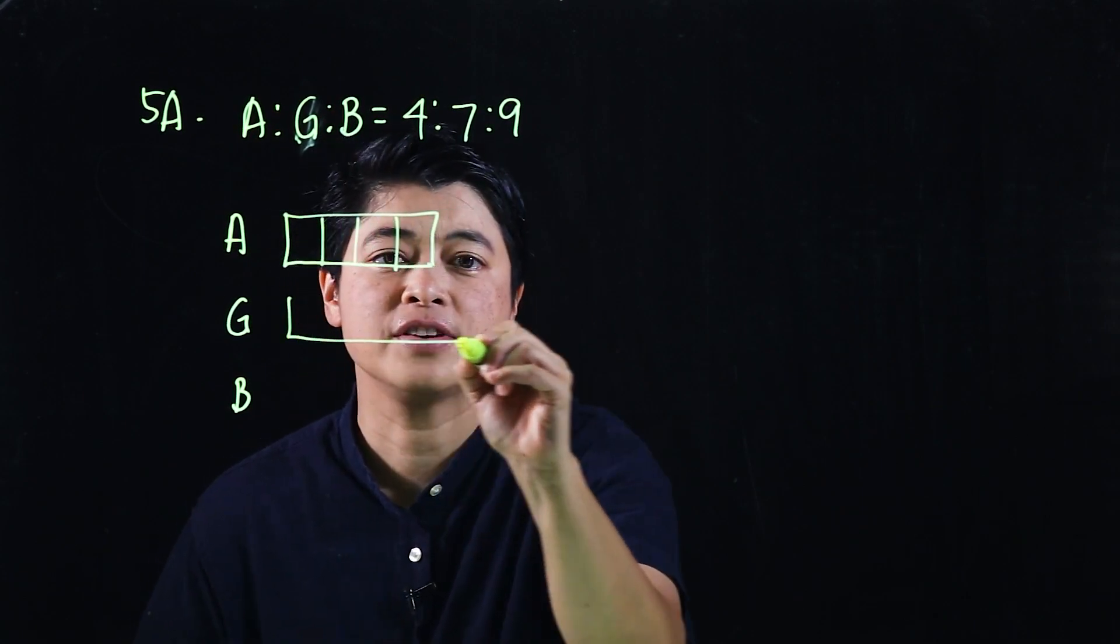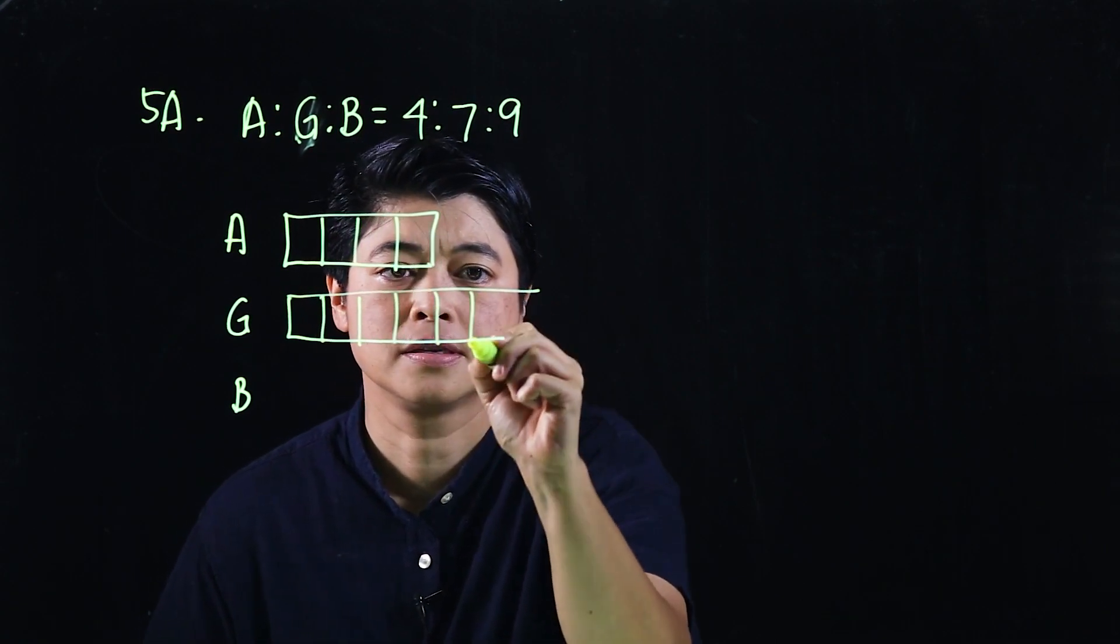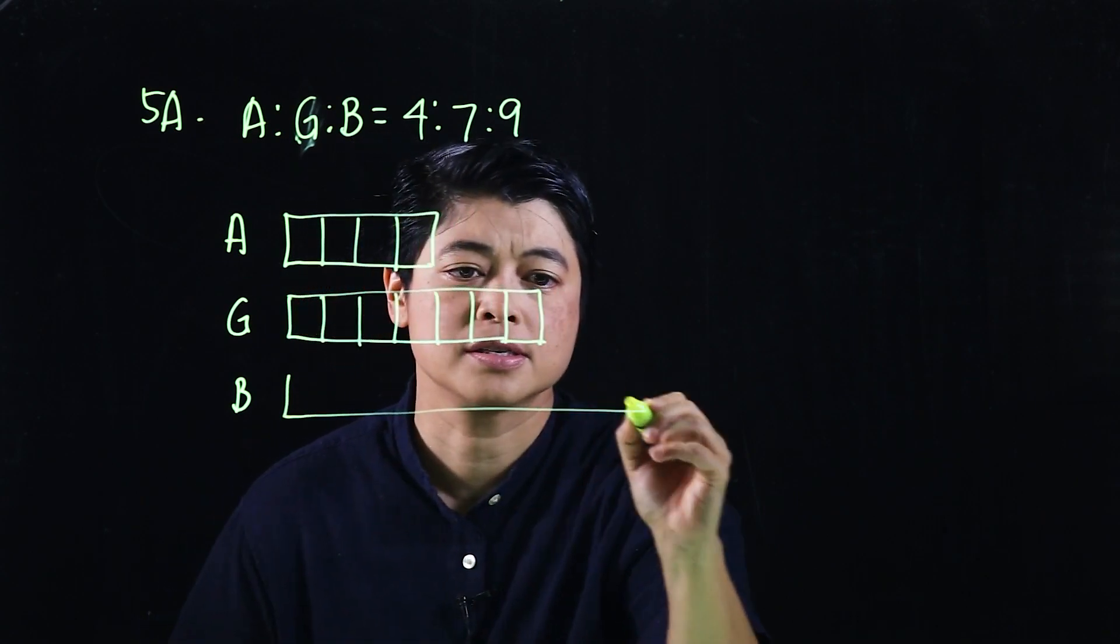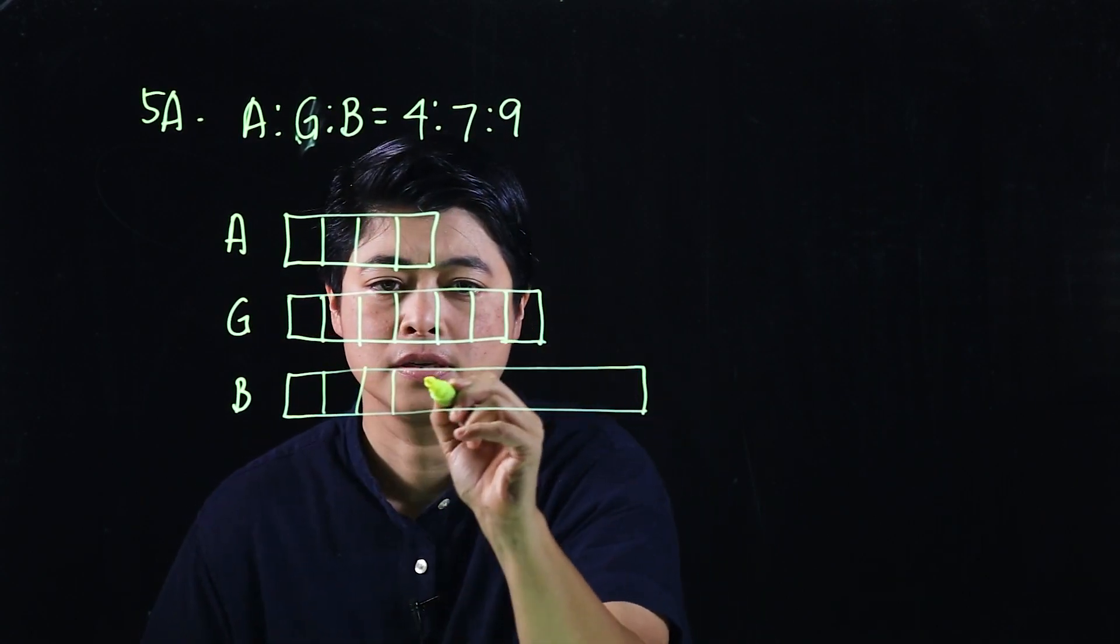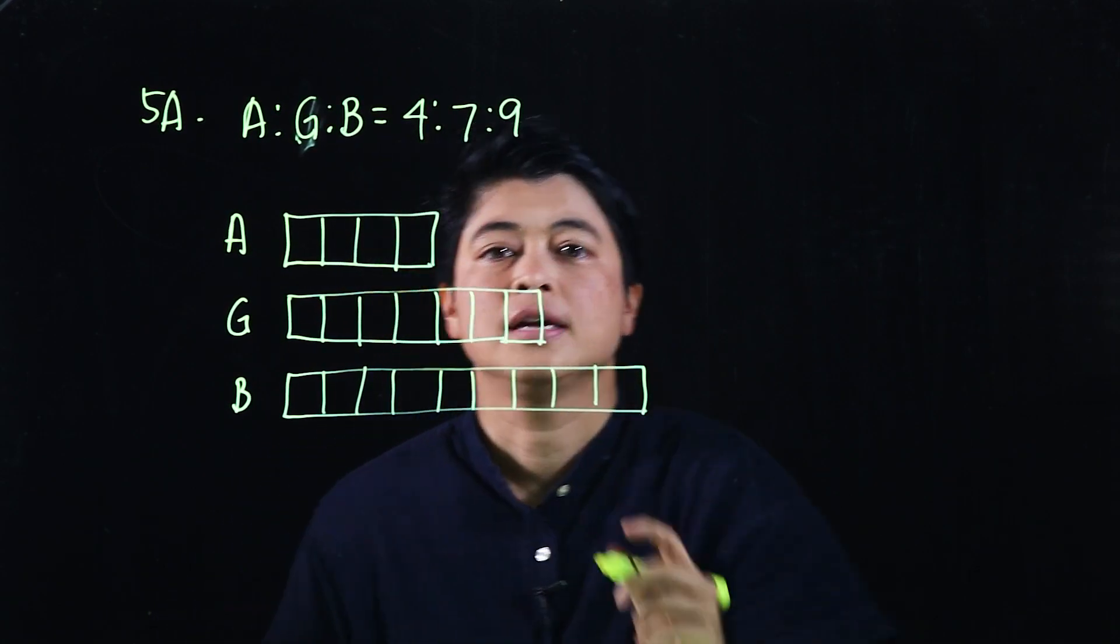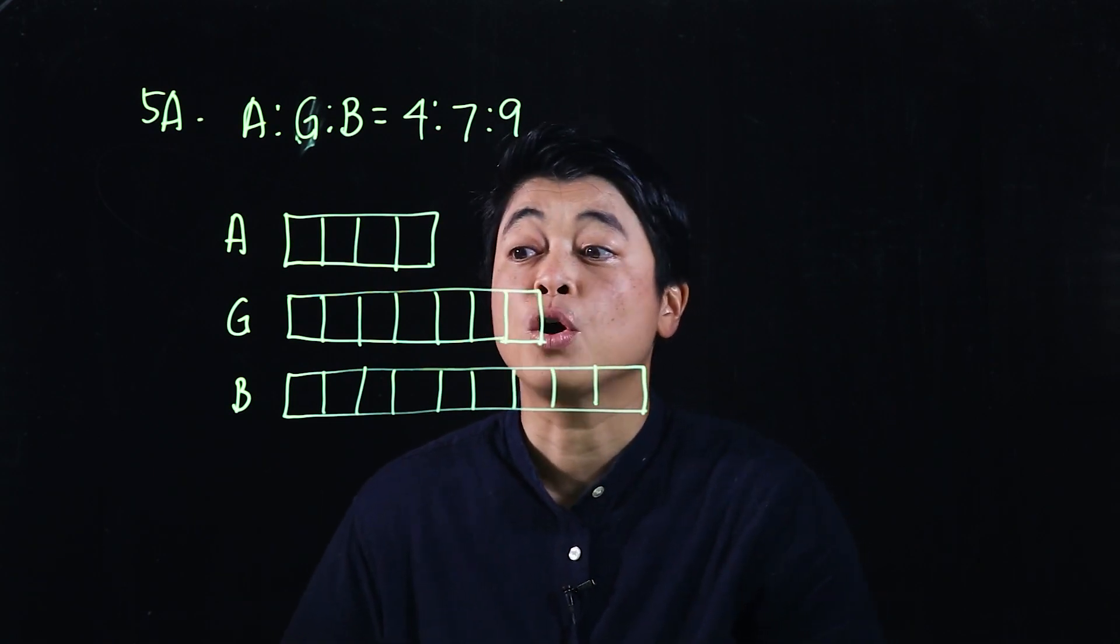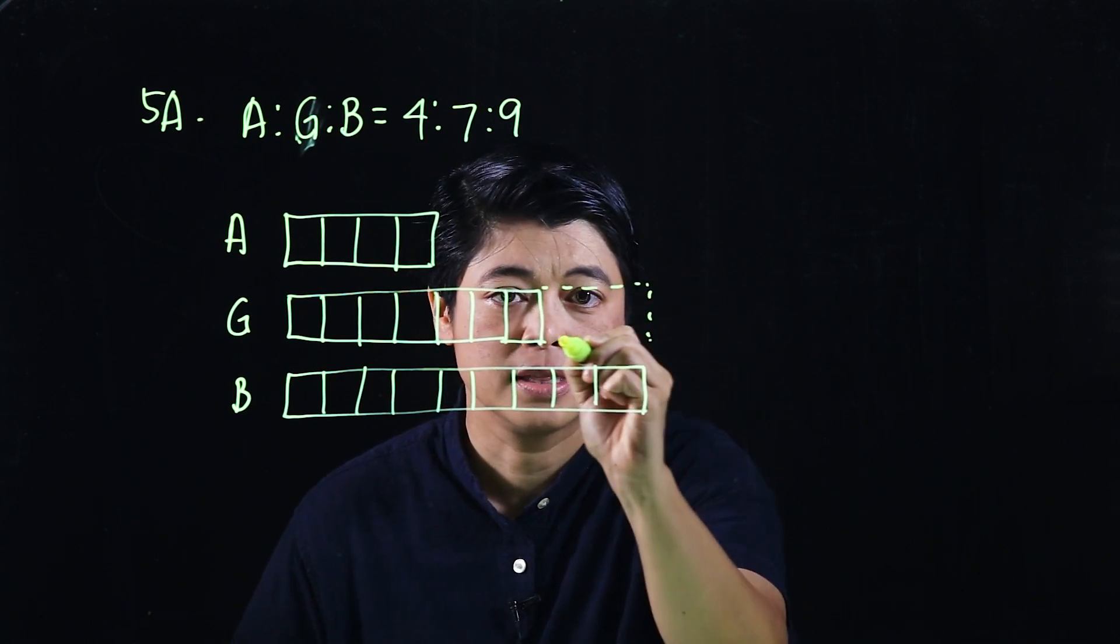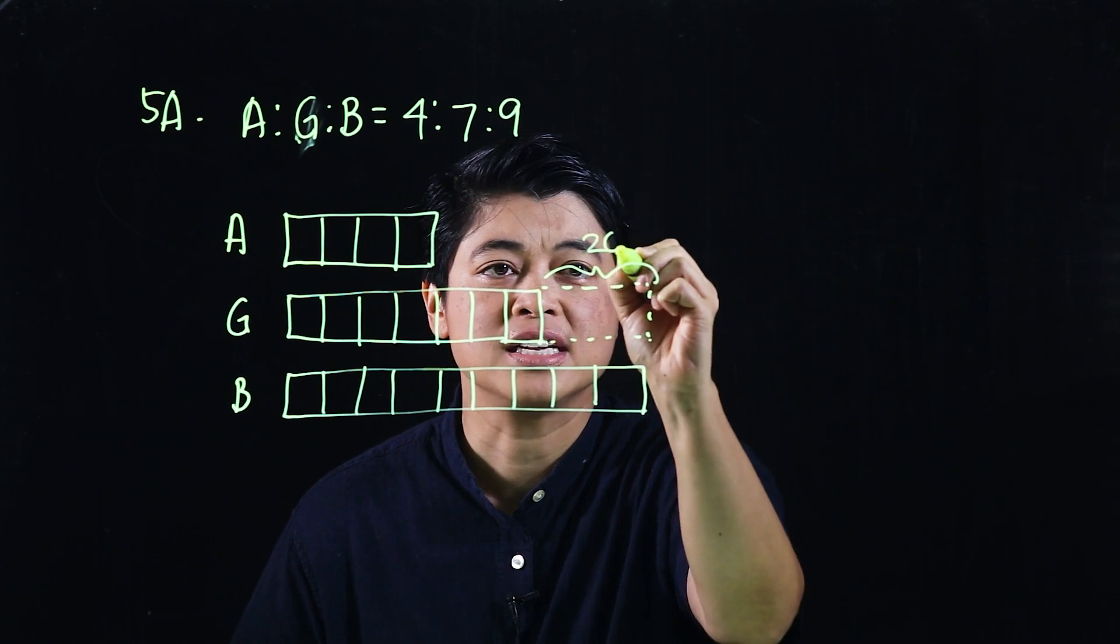Four divisions, which means this has 7 divisions, and this has 9 divisions. And it says that there are 26 more boys than girls, so that means this must be the 26.